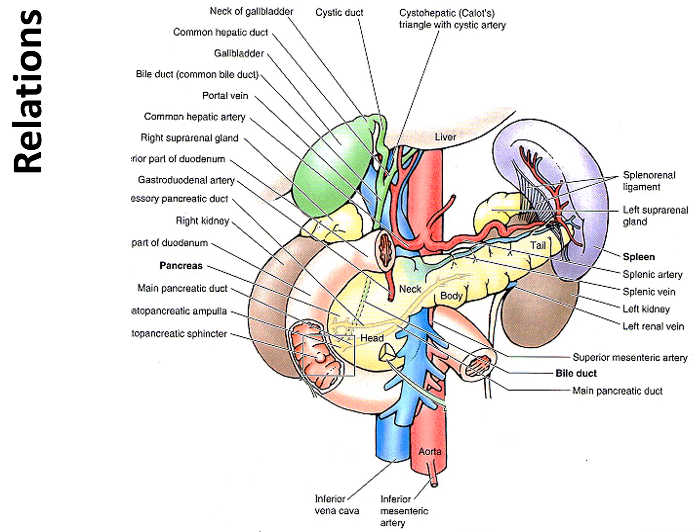The four parts of the pancreas are the head, neck, body, and tail. The head of the pancreas, which is the expanded part of the gland, is embraced by the C-shaped curve of the duodenum. The uncinate process, a projection from the inferior part of the head, extends medially to the left, posterior to the superior mesenteric artery.